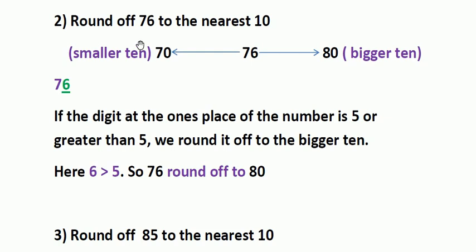Next: round off 76 to the nearest ten. Step one: 76 lies between 70 and 80 — 70 is the smaller ten and 80 is the bigger ten. Next, we find the digit at the ones place of 76. If the digit at the ones place is 5 or greater than 5, we round it off to the bigger ten. Here the ones digit is 6, and 6 is greater than 5, so we round off 76 to 80.